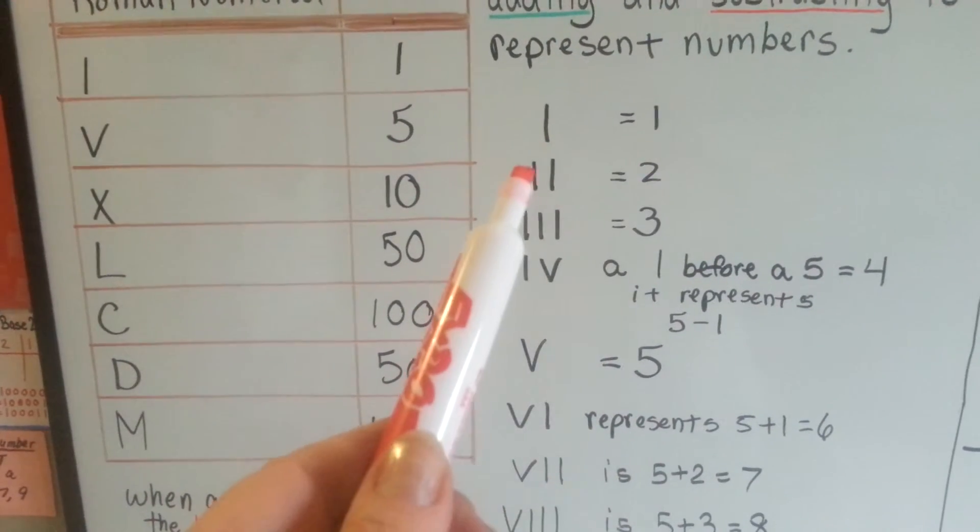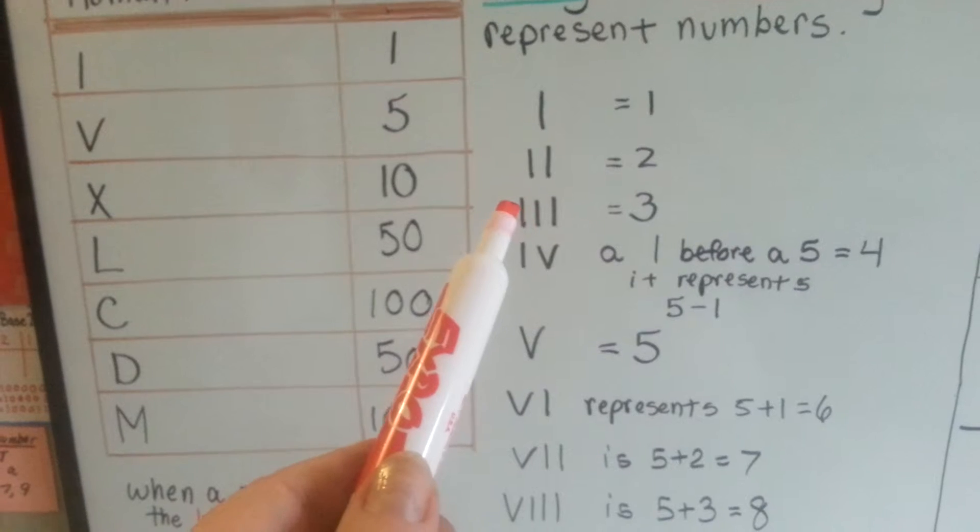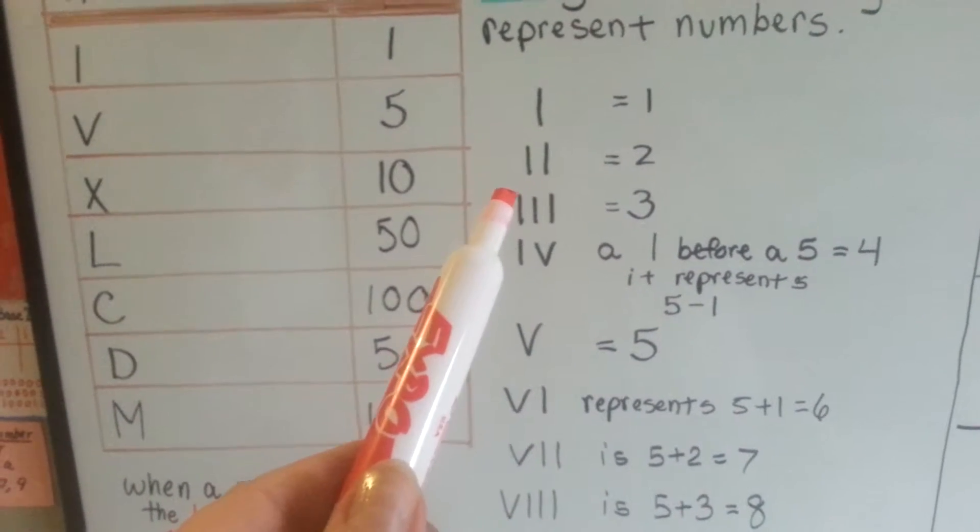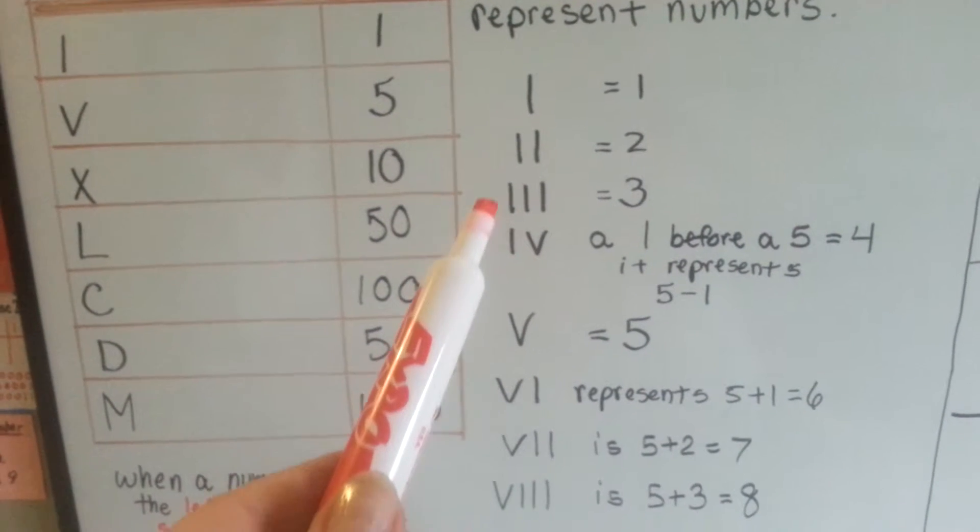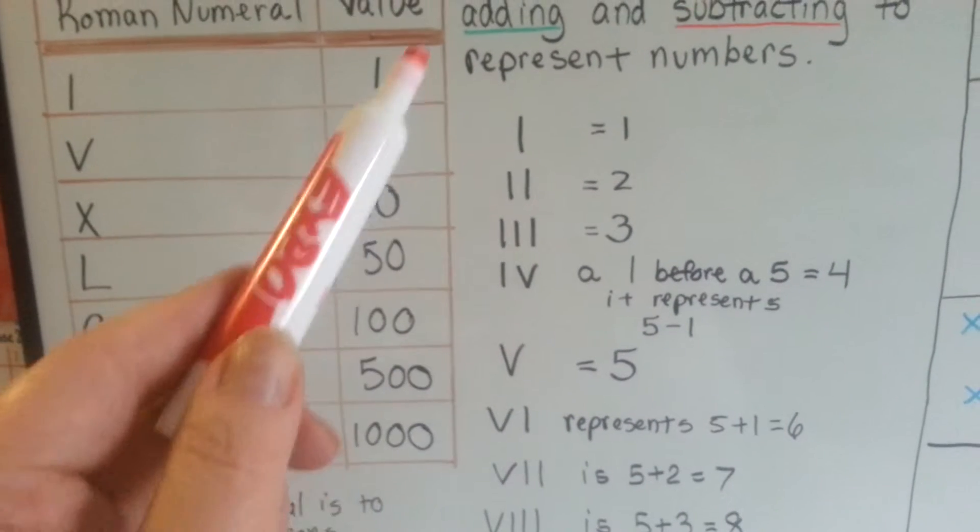So I is 1, two lines is 2, three lines is 3, and there's never more than 3. They never group more than 3 together. Three I's, three X's. You always just see 3 and no more, because then they start subtracting.